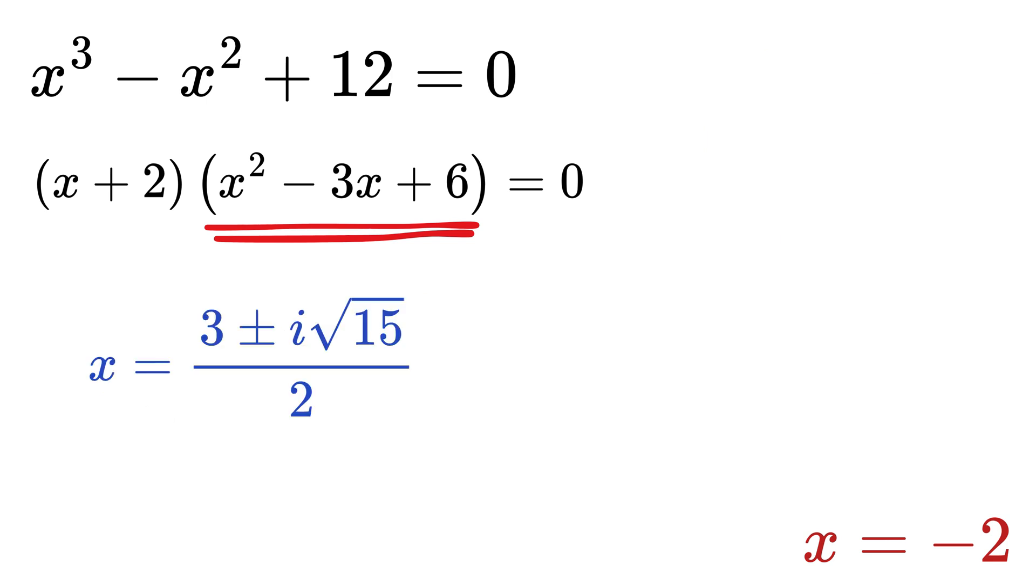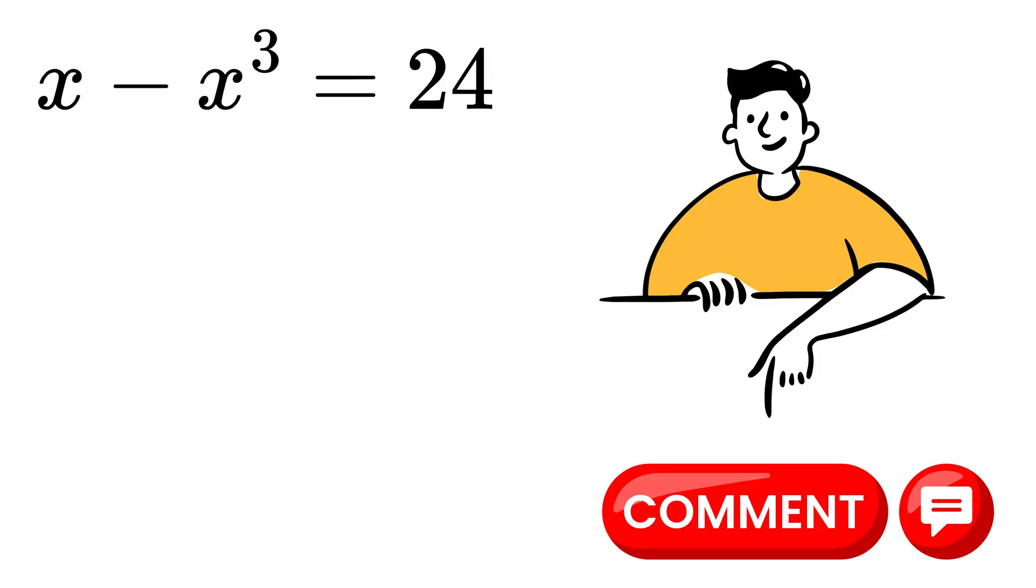We get x equals 3 plus or minus i times the square root of 15 upon 2. See this i part. That means we have complex roots, where i equals square root of negative 1. That was amazing, wasn't it? Now, let me know in the comments all three values of x for this equation.